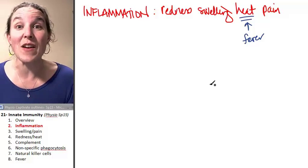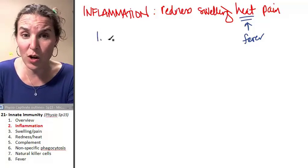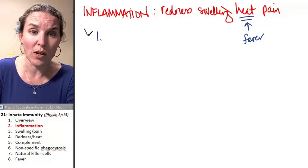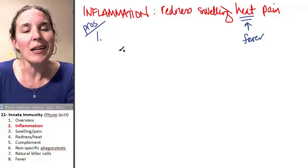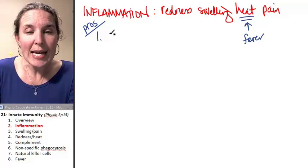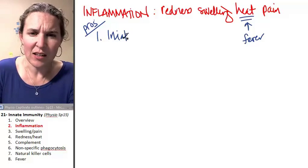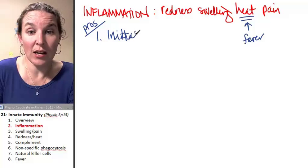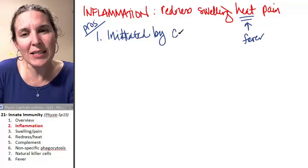The purpose of an inflammatory response, or maybe we should say the advantages of an inflammatory response. First of all, so these are all the pros. Like, why would we do this? Why is it beneficial to do this? Number one, inflammation. I'm going to put this as my number one. It's initiated by inflammatory cytokines.